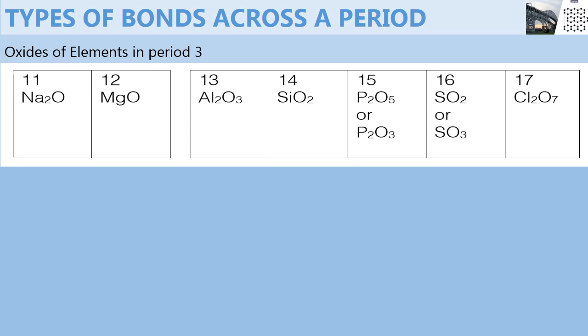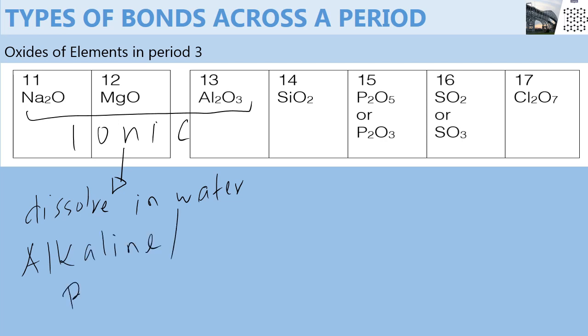Sodium oxide, magnesium oxide, and aluminium oxide form ionic bonds with oxygen. When these oxides are dissolved in water, they form alkaline or basic solutions.